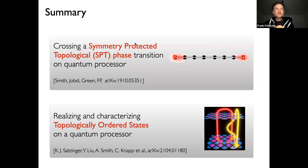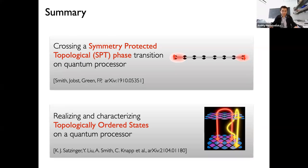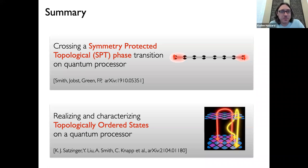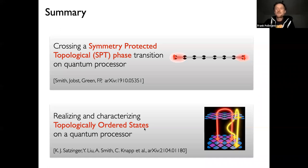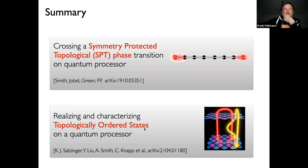To conclude: we discussed how to use quantum computers to cross symmetry-protected topological phase transitions in 1D systems, and how to realize topologically ordered states in 2D. In the Q&A, the simplest non-abelian string net model being explored is the Fibonacci model, because we are curious about simulating non-abelian braiding. We have general frameworks for all string nets, and the Fibonacci case is the first we worked out in detail.